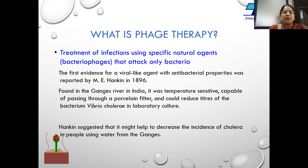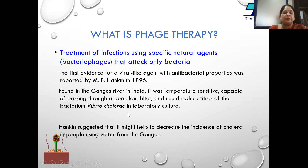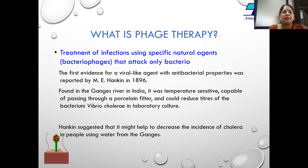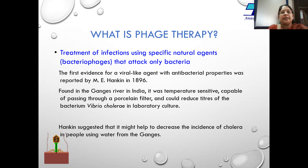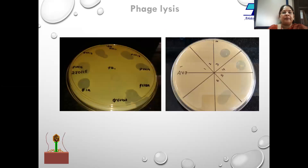The scientist Hankin, who came up with this publication, postulated that there is an entity in the water of the Ganges which passes through a porcelain filter and could reduce the titers of Vibrio cholerae in laboratory culture. Although he did not call it a bacteriophage, this was the first cited literature regarding bacteriophages.